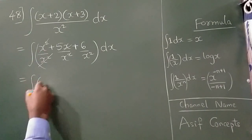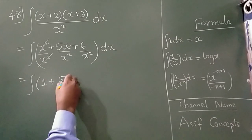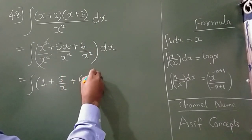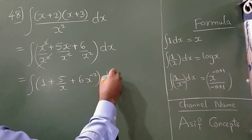So now what is remaining here: only 1 is remaining here, 5 by x and here 6. This 2 goes up so I can write like this.